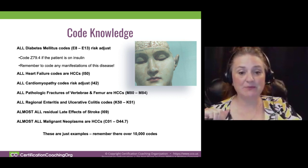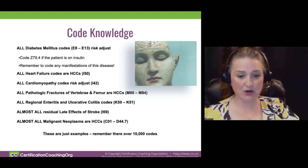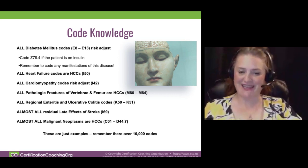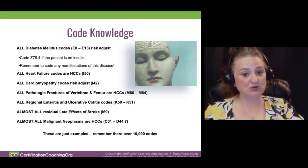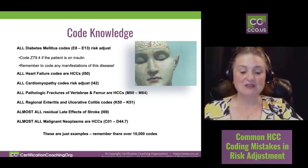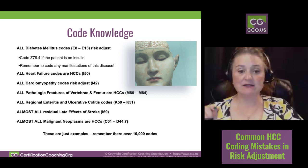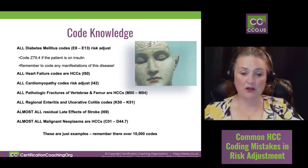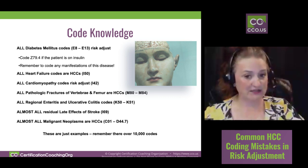Often overlooked are pathological fractures. Regular fractures don't generally risk adjust because they're temporary and not chronic, but a pathological fracture is different. It could be due to cancer — another HCC to capture — or it could be related to osteoporosis. Both males and females can have osteoporosis; it's not just a female thing. You could have two codes: a fractured femur and then the osteoporosis code, if that was the associated condition. Understand the guidelines around pathological fractures.